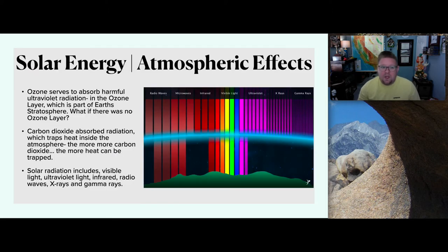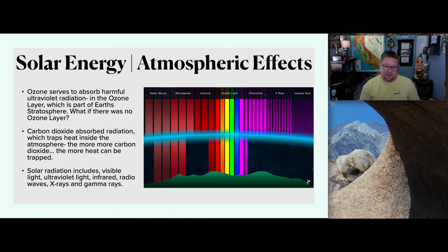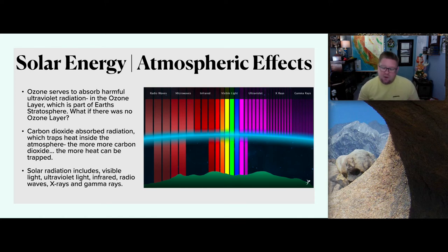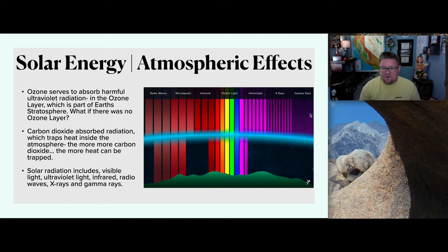Moving forward — solar energy and the atmospheric effects. Here we have the electromagnetic spectrum again. An important thing to introduce is the atmosphere, shown here as a blue line. You'll notice that a lot of the radiation coming down stops — a lot of the ultraviolet, X-ray, and gamma rays, which are incredibly dangerous, stop in our atmosphere. That's really important because it's protecting us and our planet from some of this really aggressive radiation. Ozone serves to absorb harmful ultraviolet radiation in the ozone layer, which is part of the Earth's stratosphere.